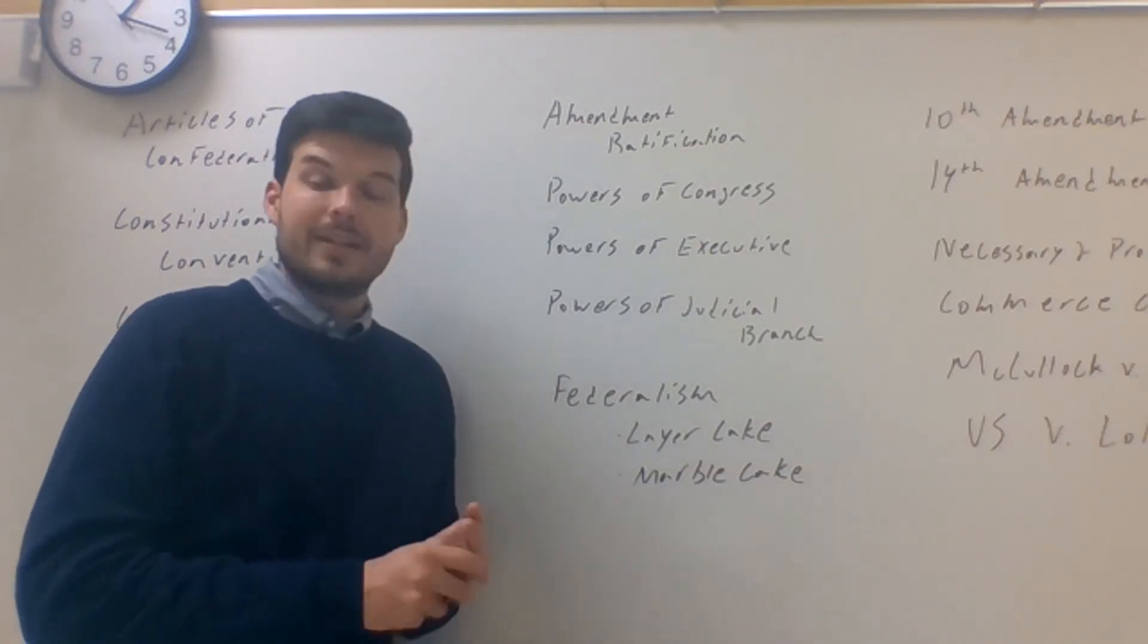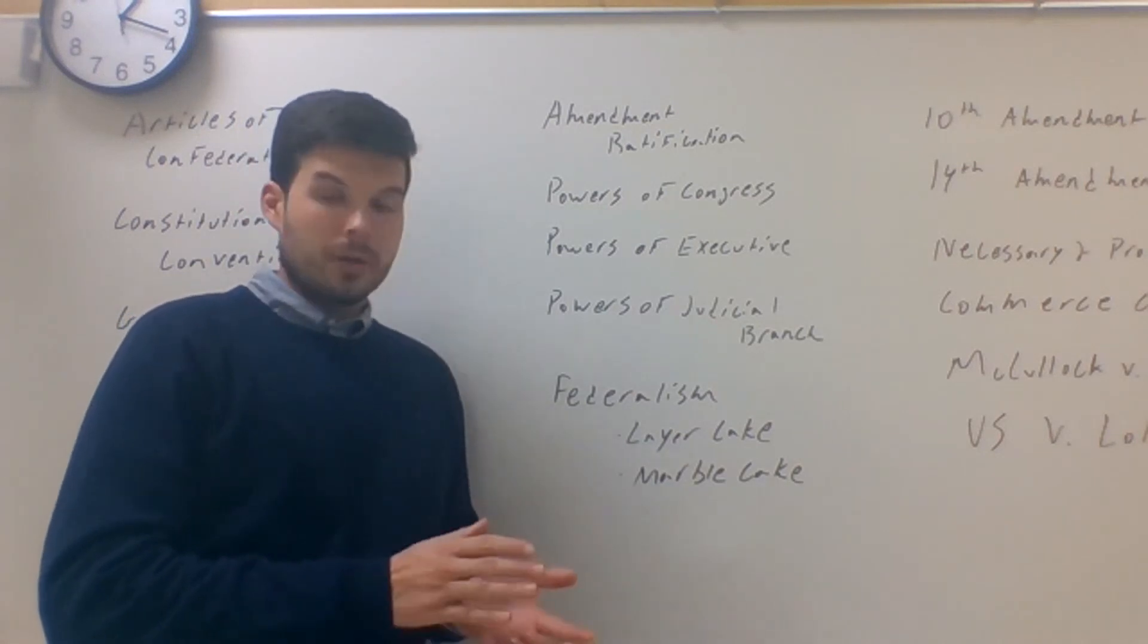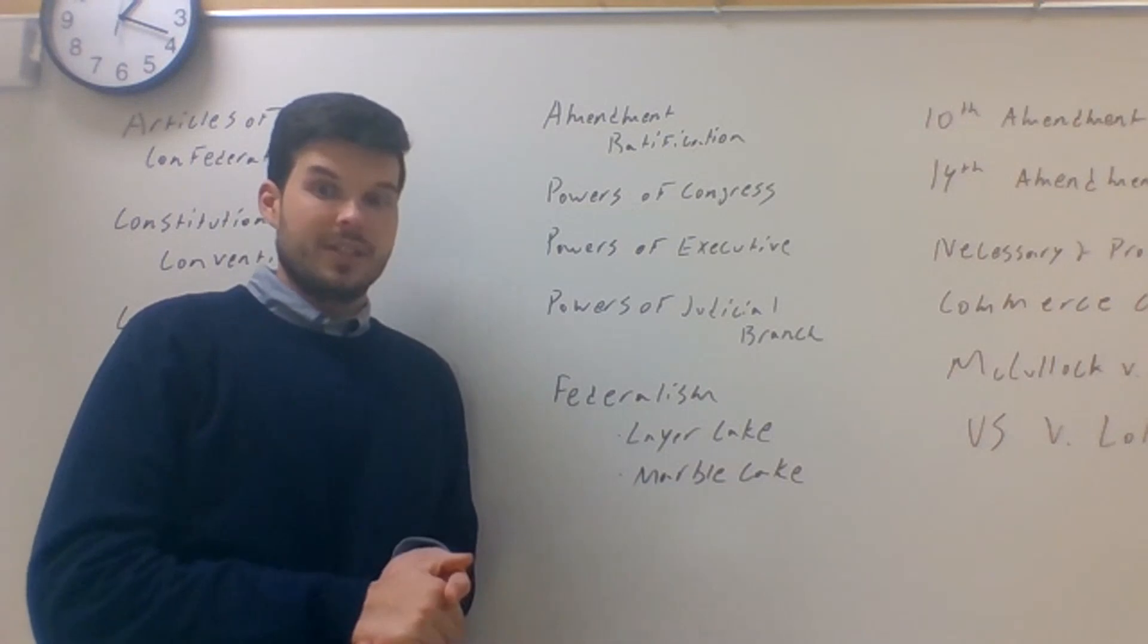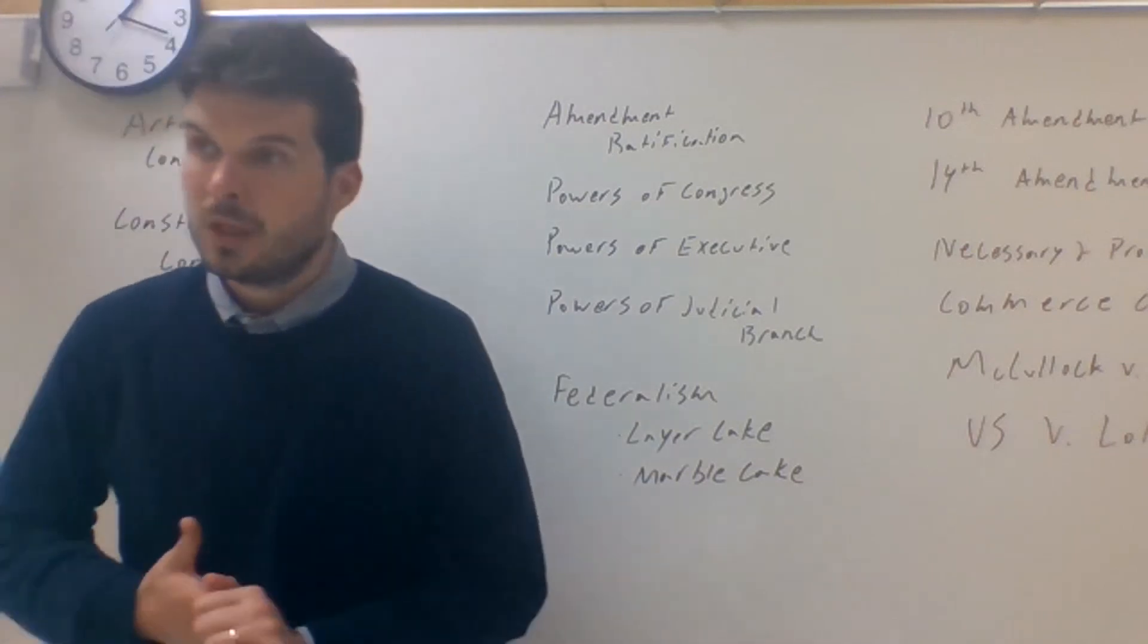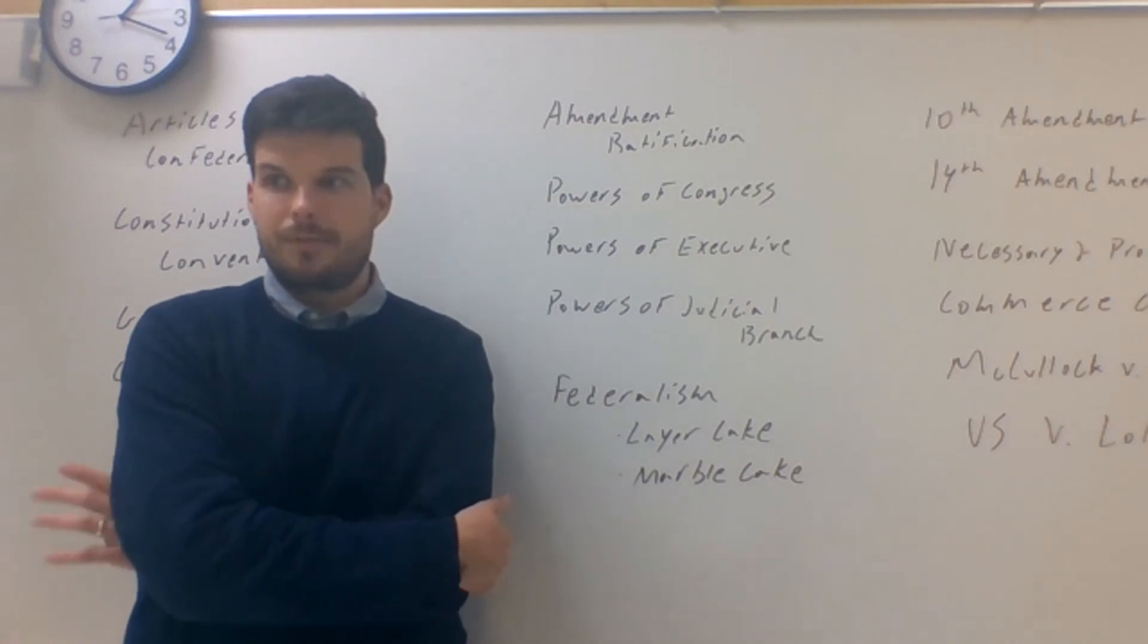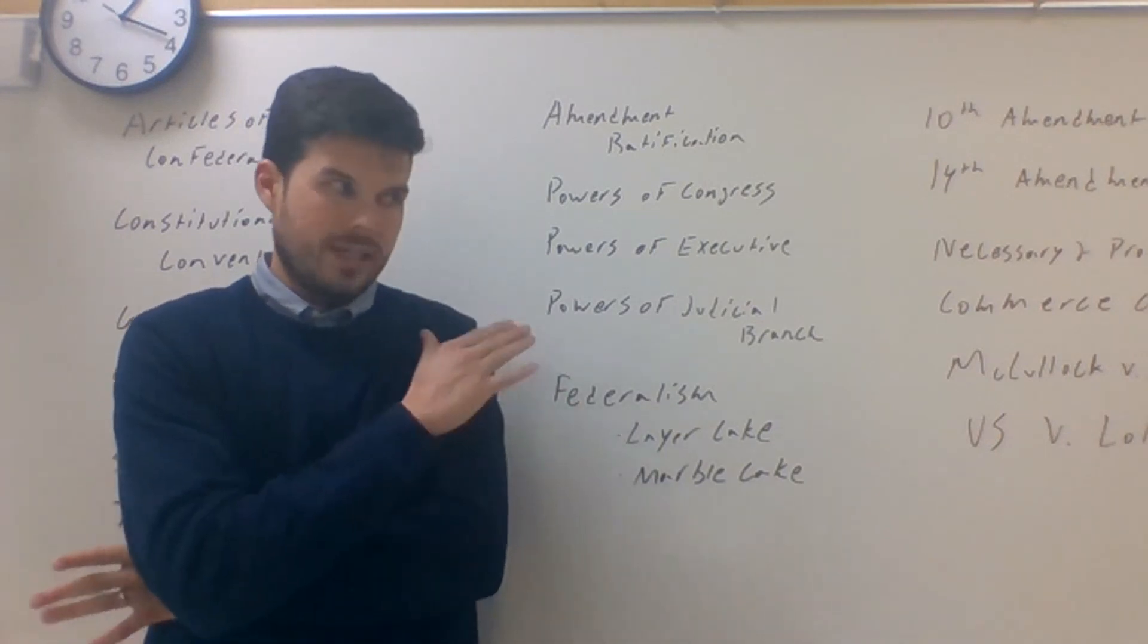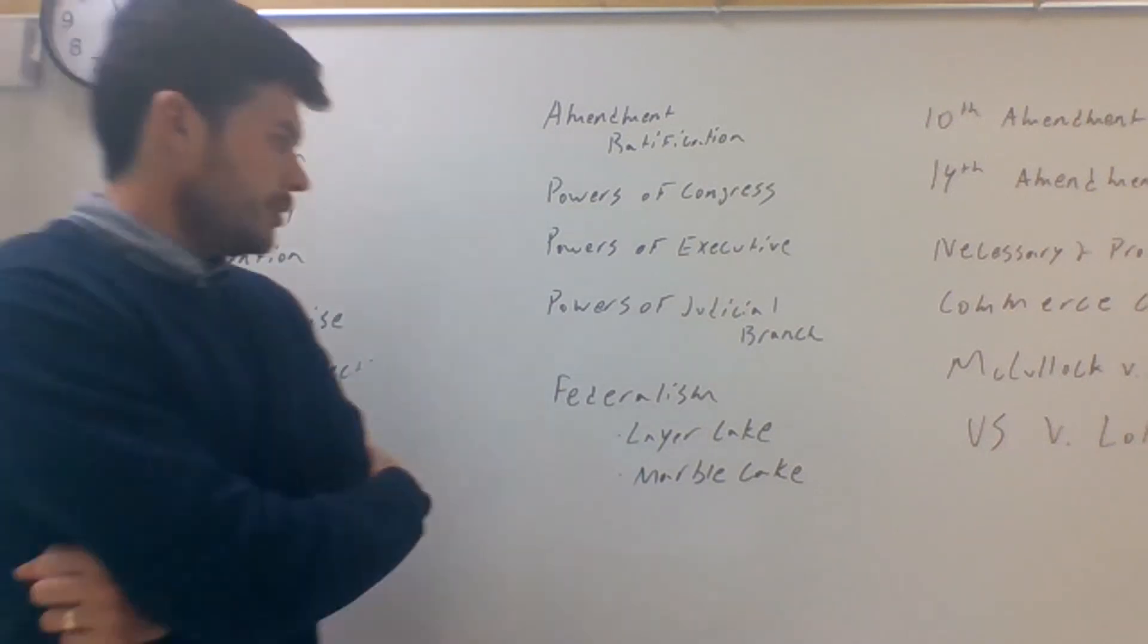The judicial branch is not given a lot of power in the constitution, and it doesn't happen until Marbury v Madison that really the power of the judicial branch is established. That is what we call judicial review where essentially the Supreme Court was able to rule a federal law unconstitutional. And that did a lot to kind of hone in on the power of this weak, misunderstood branch.